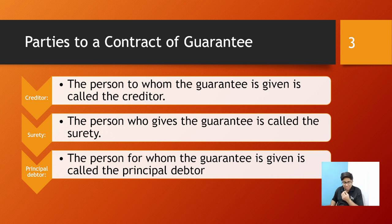The person to whom the guarantee is given is called the creditor. There are two persons: one who is supposed to make the payment to the other. The person who is supposed to make the payment is the debtor. The person who is supposed to receive the payment is the creditor. And the person who gives the guarantee — in case the debtor does not make the payment, the guarantor will make the payment.